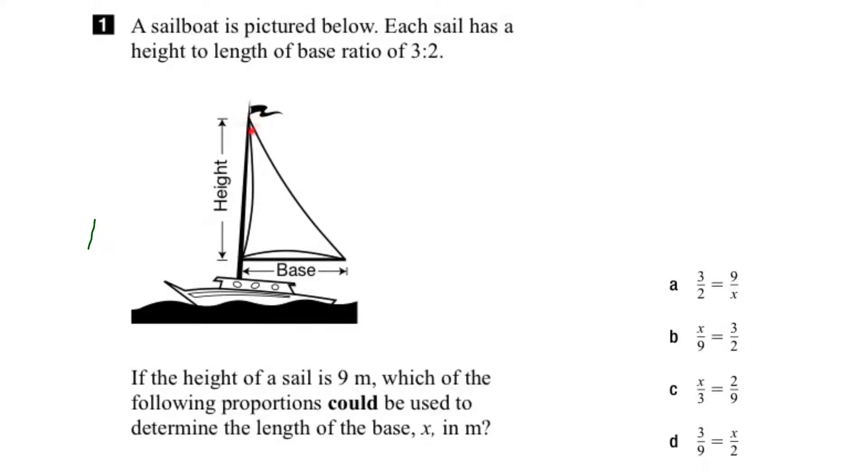In this question, we're told that a sail has a height to base ratio of 3 to 2. What's important when we're talking about ratios is the order in which they give us the information.